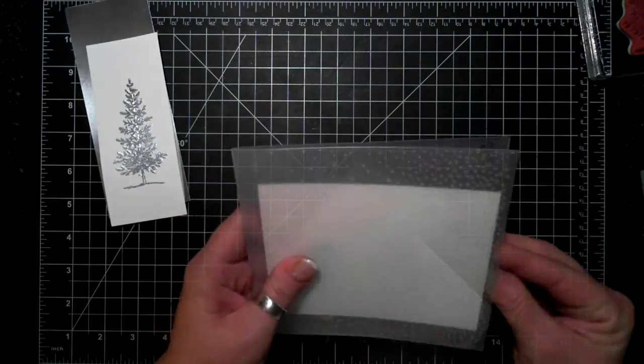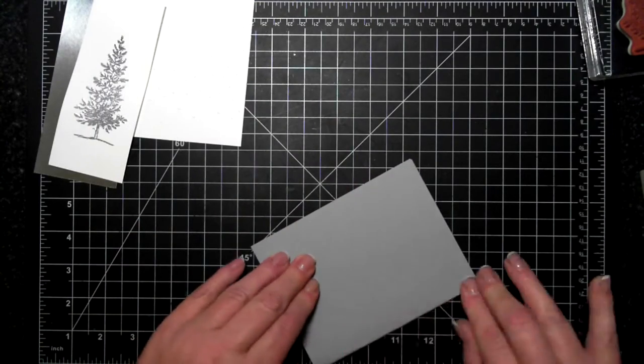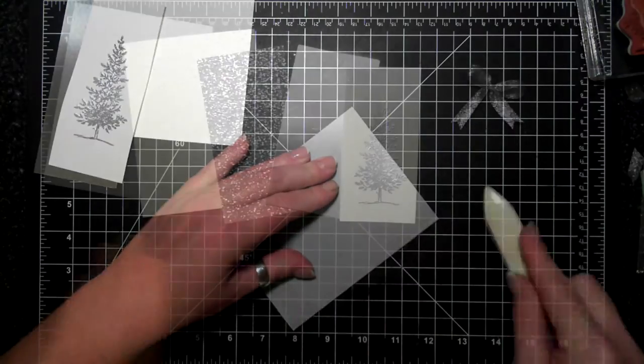I'm using the Softly Falling embossing folder on another piece of card, and my card base today is Smoky Slate.